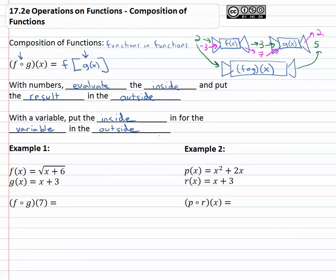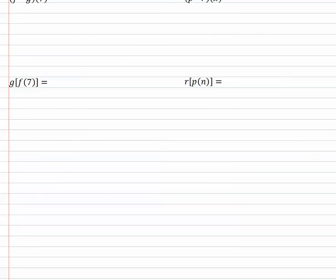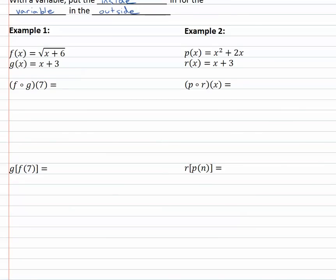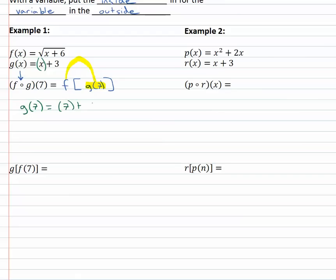Let's take a look at a couple of examples where we put one function into another and do a composition. In example one, we're given that f of x equals the square root of x plus six, g of x is x plus three, and we're asked to find f composed with g of seven. When we see that open dot we know it's composition — let's rewrite it as f of g of seven. We need to start with the inside function, get a result, and that result will be plugged into the outside function. Starting with g of seven, we replace the variable with seven: seven plus three is ten.